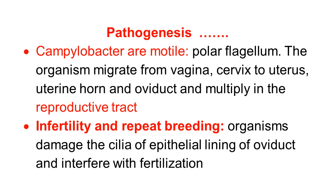The pathology causes infertility and repeat breeding. The organisms damage the cilia of the epithelial lining of the oviduct and interfere with fertilization. Because it damages these cilia of the epithelial cells of the oviduct, fertilization is not possible.